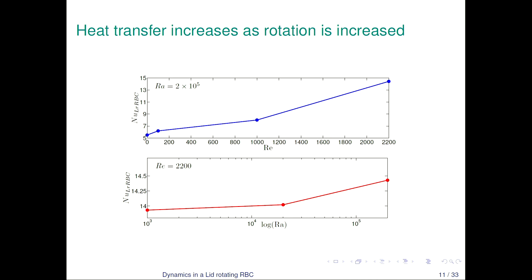The study is conducted for a fixed aspect ratio gamma of 2.5 and a fixed Prandtl number of 0.677. For a fixed Rayleigh number of 2×10⁵, as we start increasing the rotation of the top lid, the heat transfer quantified by the modified Nusselt number starts increasing. The second graph shows that if you fix the Reynolds number and increase the Rayleigh number, the Nusselt number increases because we are increasing the heating.